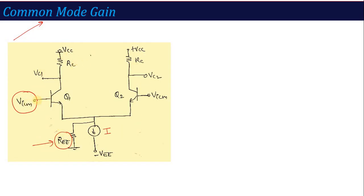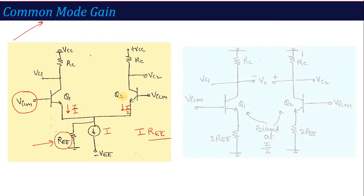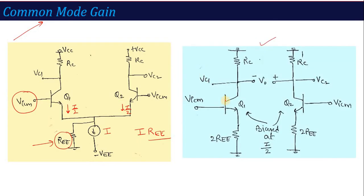In Common Mode, when the two inputs are connected with the same Common Mode voltage, we make both transistors identical, and in both the emitter current flows as I/2 and I/2. The total current becomes I, which flows through the REE resistance, developing a voltage of I into REE. So in Common Mode Gain calculation — as we did in MOSFET Differential Pair — REE is written as twice of REE, and the circuit is broken into two symmetrical sections, called common mode half circuits. Q1 and Q2 are identical, so the circuit can be split into two symmetrical half circuits.